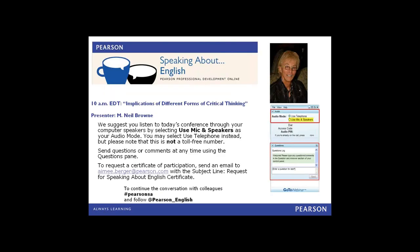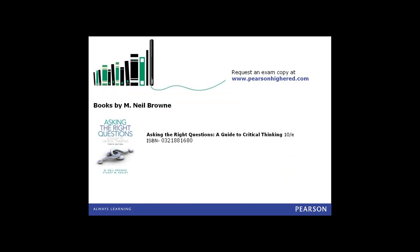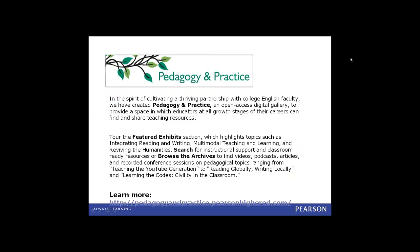Our presentation this morning is entitled Implications of Different Forms of Critical Thinking, and our speaker is Neil Brown. Neil is a Distinguished Teaching Professor of Economics and Law and a Senior Scholar at Bowling Green State University in Ohio. In addition to teaching courses in critical thinking and great ideas, he manages the admissions, mentoring, and programming needs of a learning community of 40 students whose interdisciplinary curriculum and research is anchored in critical thinking and ethical reasoning.